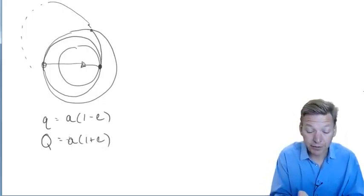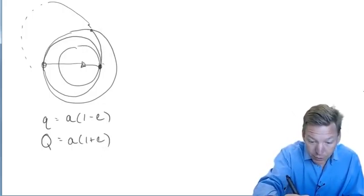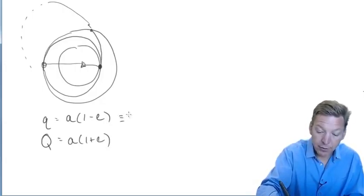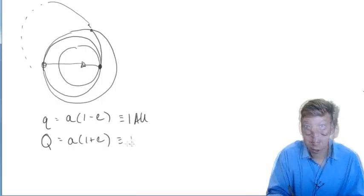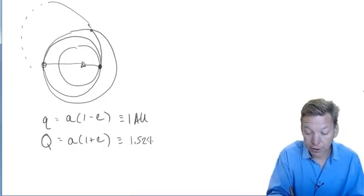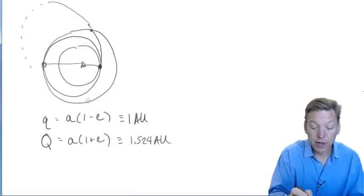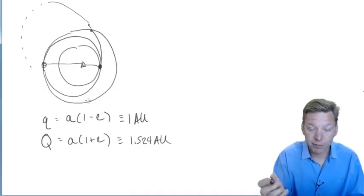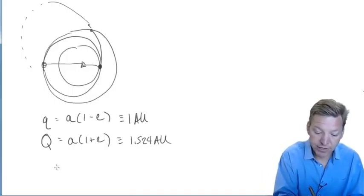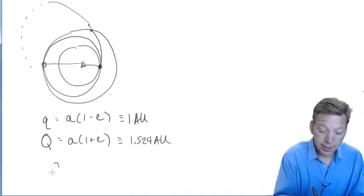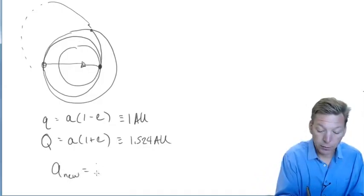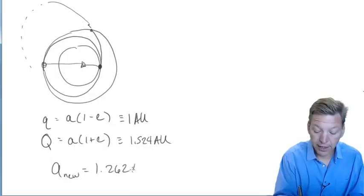So if you know the semi-major axis, you can figure out the eccentricity if you know the locations where these perihelia and aphelia are. In fact, you do because you want the perihelion to be Earth's orbit, which is 1 AU. You want the aphelion to be the Martian orbit, which is 1.524 AU. You can solve these two for the semi-major axis. Of course, we know the semi-major axis is just the average of these two. So the semi-major axis of your new orbit that you're putting this thing on is 1.262 AU.